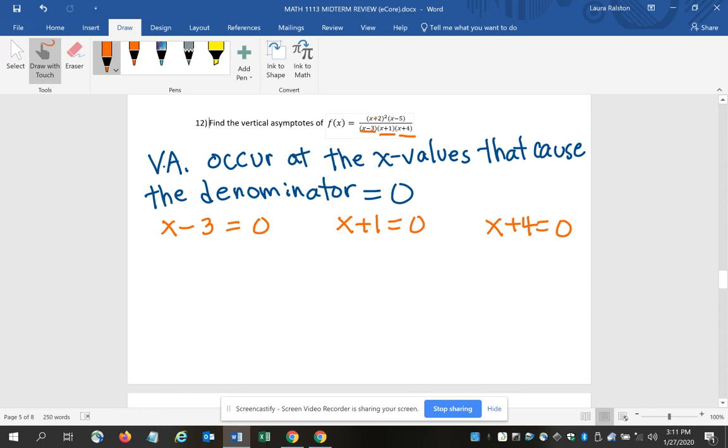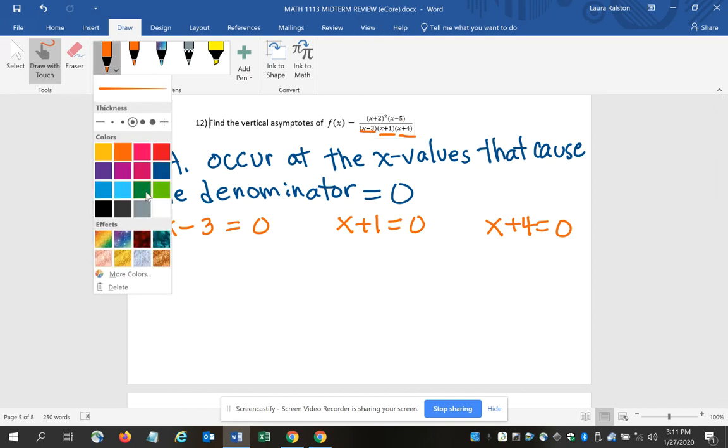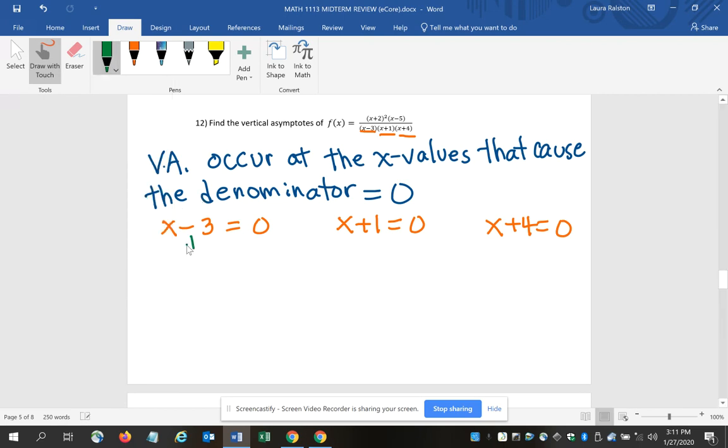I want to solve each one of those individually for x, and that's going to tell me where my vertical asymptotes are going to occur. For x minus 3, we need to add 3 to either side to solve for x, so x is 3.